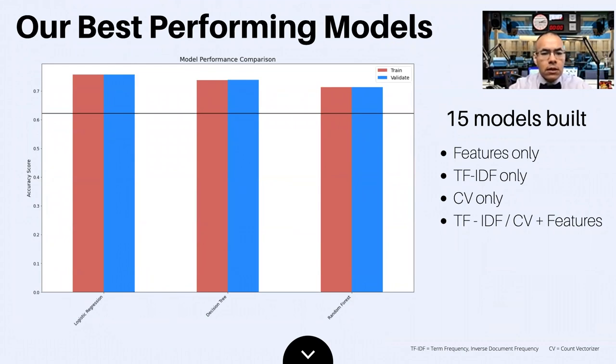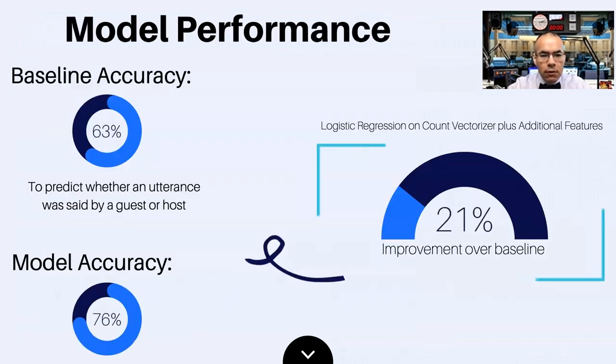We implemented 15 different classification models made from different configuration features. Some of these features included using features from the dataset, term frequency inverse document frequency, also known as TF-IDF, which transforms text into a usable vector. There are two components to TF-IDF. The first component identifies how often a word appears in a document, and the second component provides a measure based on how many documents a word will appear. TF-IDF also provides the importance of the words. Count Vectorizer. Similar to term frequency, this tool is used to transform text into a vector on the basis of the occurrences of each word in the corpus. And finally, a combination of TF-IDF, count vectorizer, and dataset features. All of our models ended up using a configuration of these previously mentioned features. However, our best performing model was the logistic regression model with count vectorizer and features included. Our results were a 21% improvement over baseline accuracy of 62% for a total accuracy of 76%. And with that, I will now let Joanne conclude our presentation.